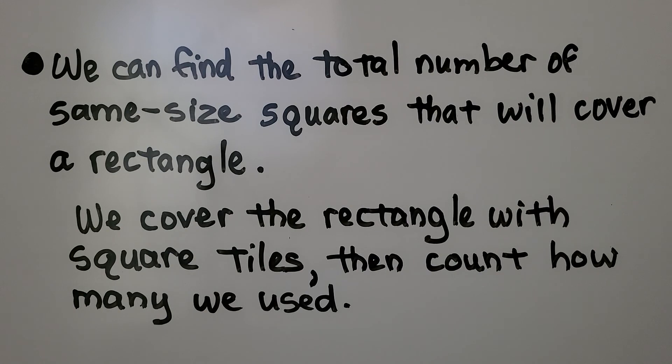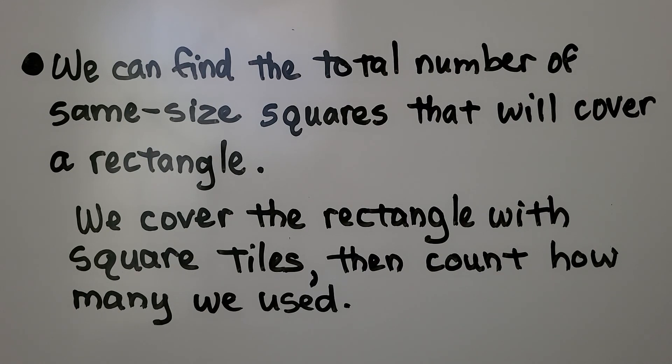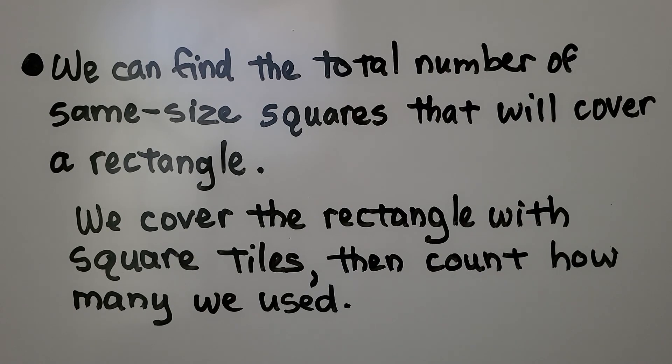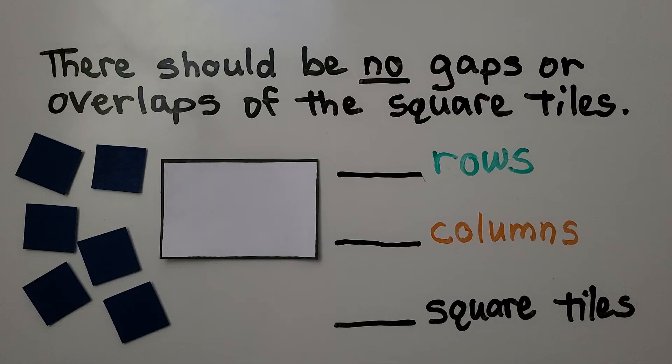We can find the total number of same size squares that will cover a rectangle. We cover the rectangle with square tiles, then count how many we used. There should be no gaps or overlaps of the square tiles.